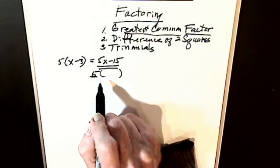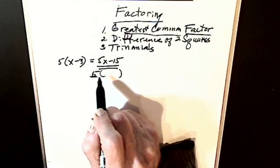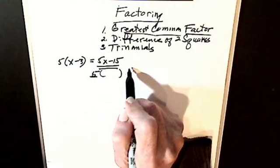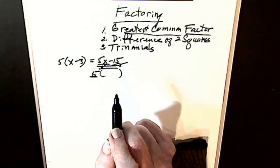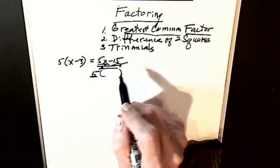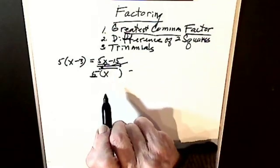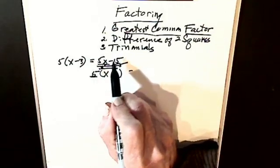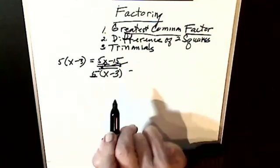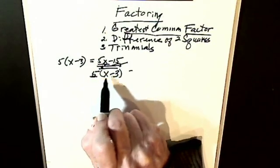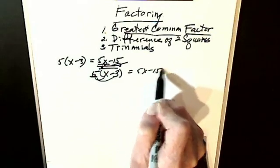So I can factor out my five. Whatever this greatest common factor is, I take it and divide it into each term. So I divide five into each term — five is cancelled and I'm left with x. Five into fifteen, with unlike signs, gives me negative three. I can always check using distributive property — if I multiply using distributive property I will get 5x minus 15.